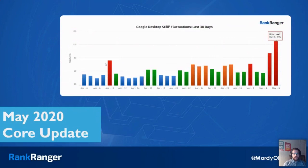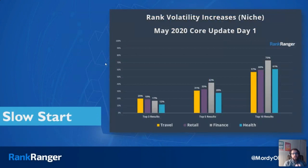Since we are currently in the middle of the May 2020 core update, here's the rank fluctuation data. The first day of the update was not that out of control, but May 6th is where the update really kicked in. These are the rank volatility increases per niche for day one of the update — top three results, top five results, top 10 results.